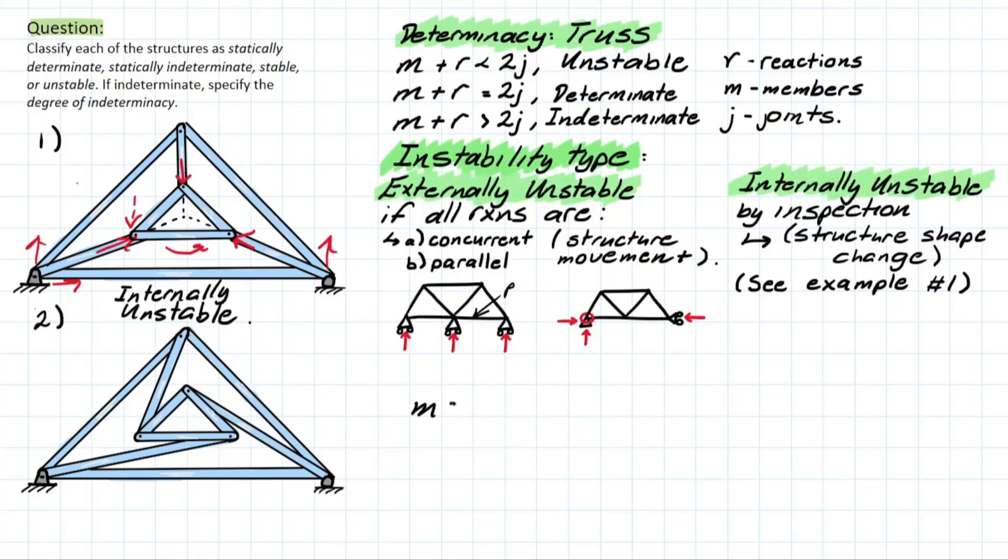We have m, which is represented by number of members. If we count out our members, let's use a different color for this. I'll use red for members. We have 1, 2, 3, 4, 5, 6, and 7, 8, 9. So we have 9 total members.